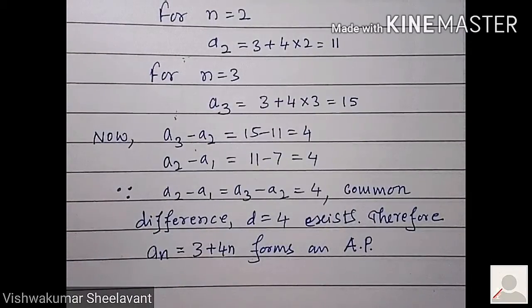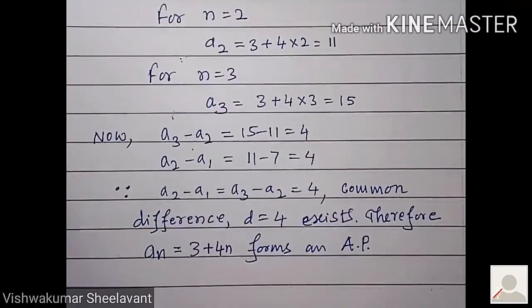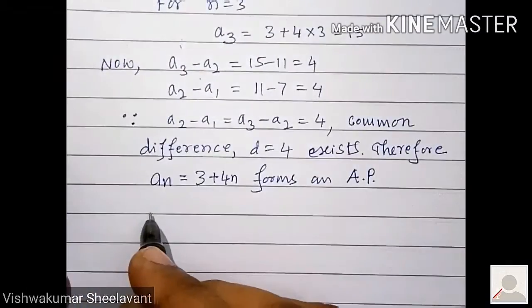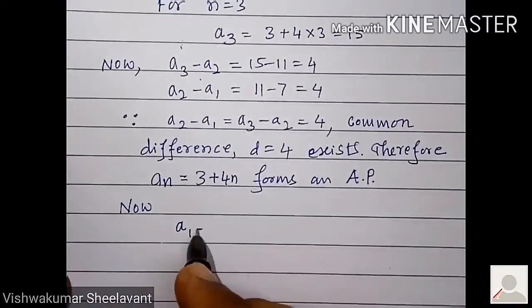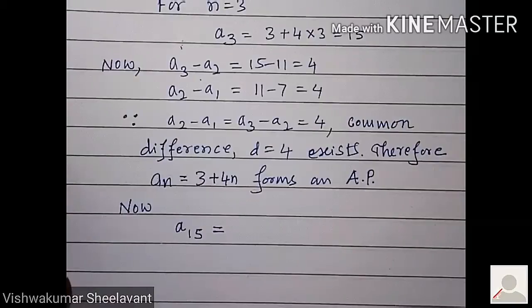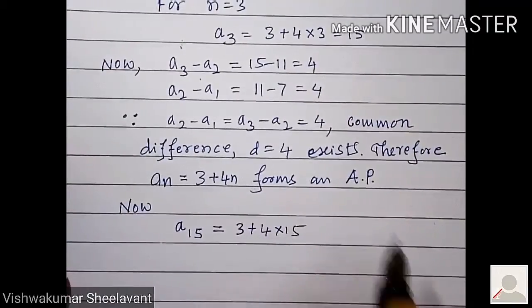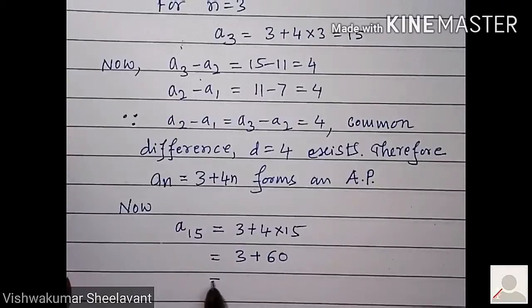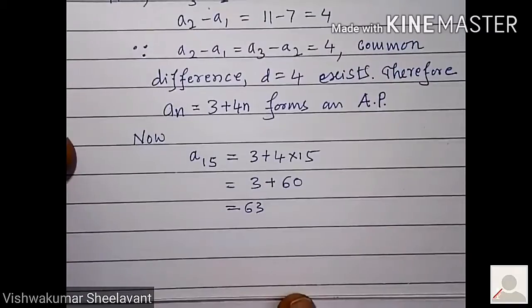You have to find the sum of first 15 terms in each case. Therefore, we will calculate a15 using the given formula: 3 plus 4 into 15, that is equal to 3 plus 60, that is 63.